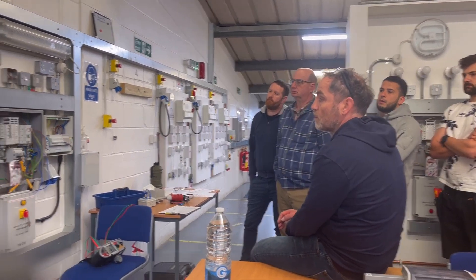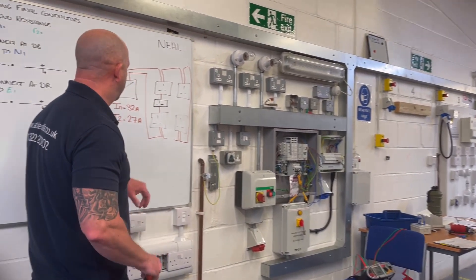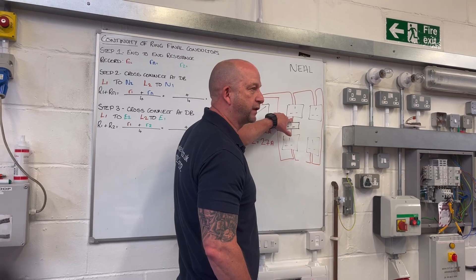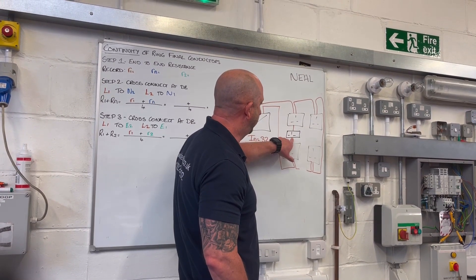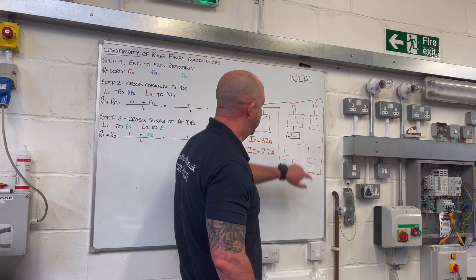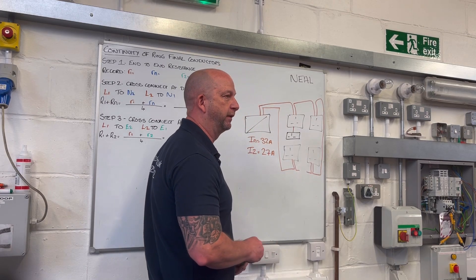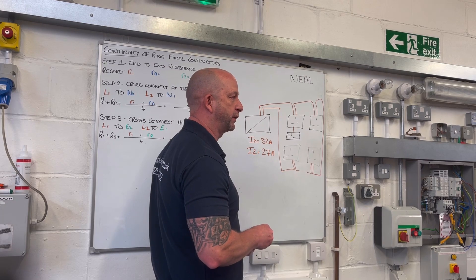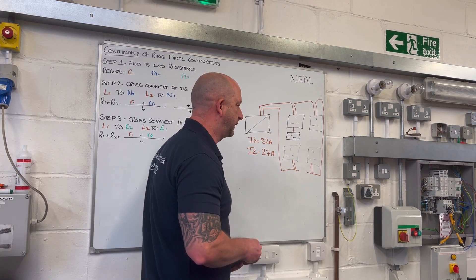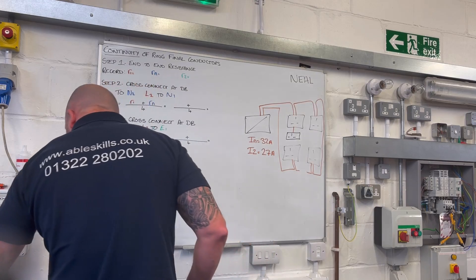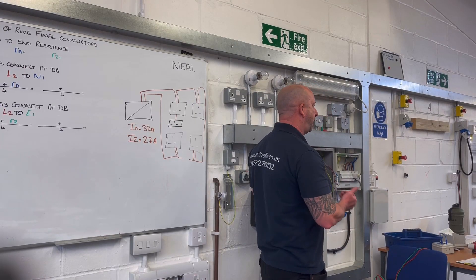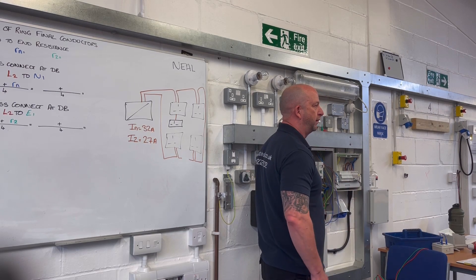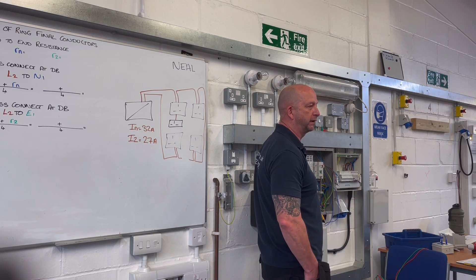So our ring final test, guys — there are three things, really. It's going to make sure that all our sockets are connected in a ring final. It will identify anything wired as a spur, and also it'll identify any hideous interconnections or figure-of-eight wiring. And also, as you said, steps two and three combined will also prove polarity. So that's why we're doing it differently than we would on any other circuit.